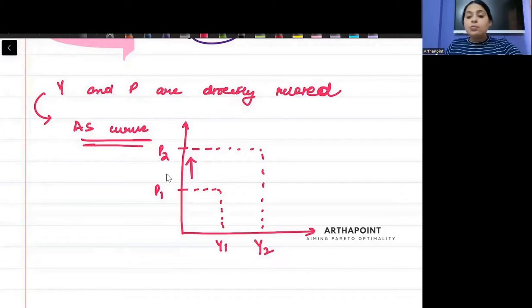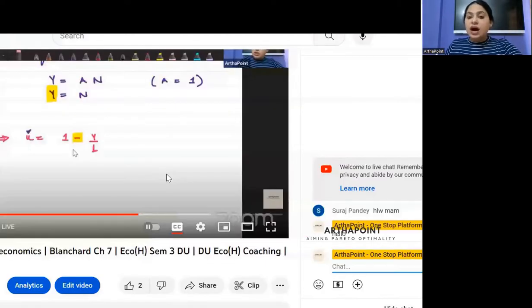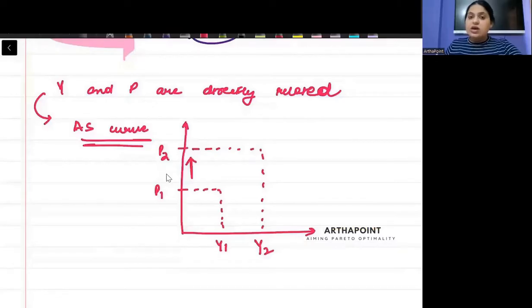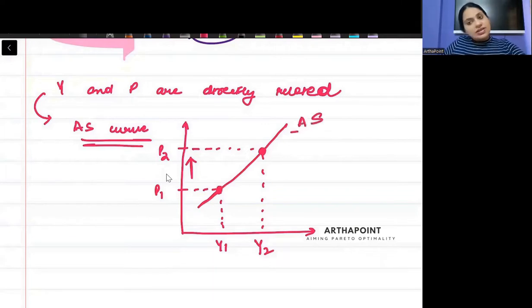If the price increases, if the price at which firms can sell their output increases, firms will be willing to sell more output. So can I say there is a positive relationship between P and Y? Yes, we can say that. So that means this is going to be an upward sloping AS curve.